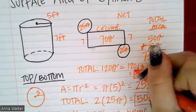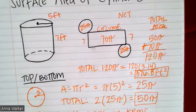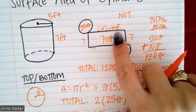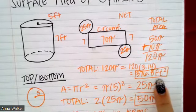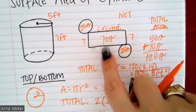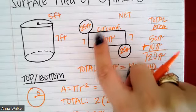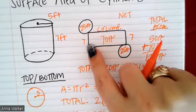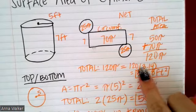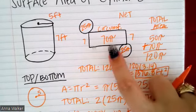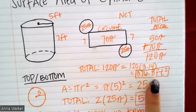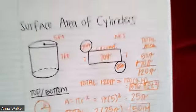A cylinder is a more complex shape to find the surface area for, because we have to figure out the circumference to determine the rectangle's length. We found the area of the two circles (top and bottom), then found the lateral area by taking the circumference times the height. We added all three together, and only at the very end did we substitute 3.14 for pi — treating pi terms as like terms throughout.